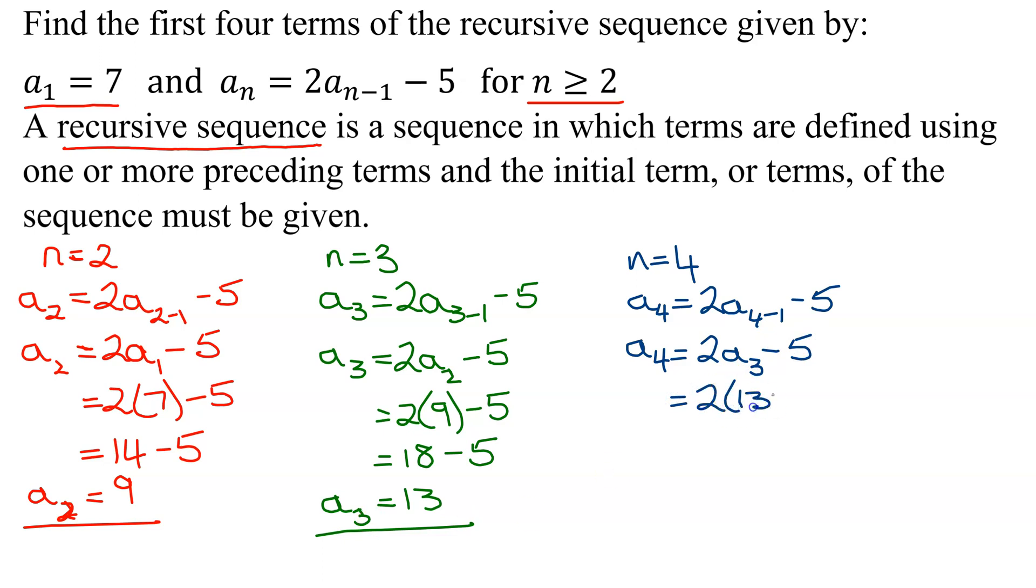It was 13, so it's 2 times 13 minus 5. 2 times 13 is 26 minus 5, 26 minus 5 is 21. So the fourth term is 21. So writing out the terms of my sequence, don't forget the first term was 7, the second was 9, 13, and then 21. So there are the first four terms of this sequence.